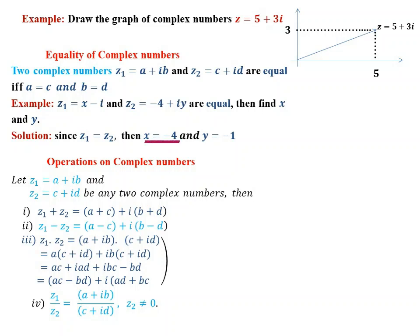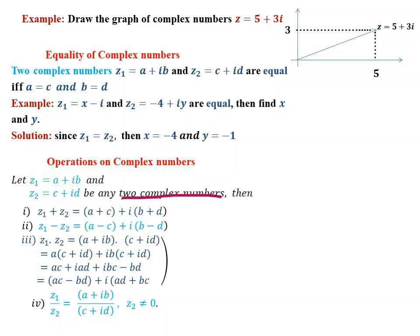Therefore x equals minus 4 and y equals minus 1. Operations on complex numbers: Let z1 equals a plus ib and z2 equals c plus id be any two complex numbers. Then z1 plus z2 is found by adding corresponding real parts and imaginary parts, giving a plus c plus i times b plus d. Similarly, z1 minus z2 equals a minus c plus i times b minus d.